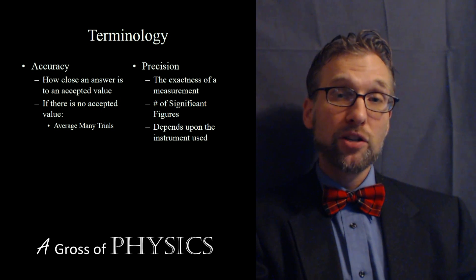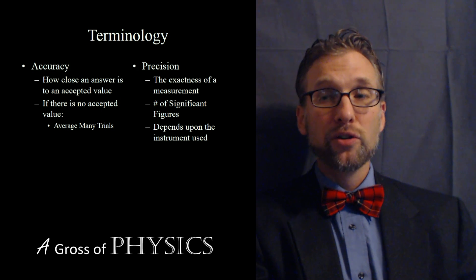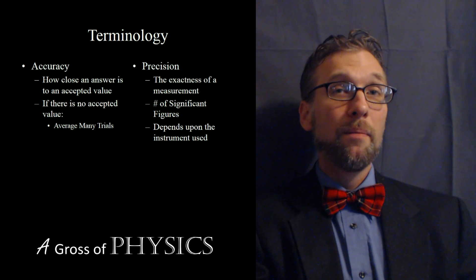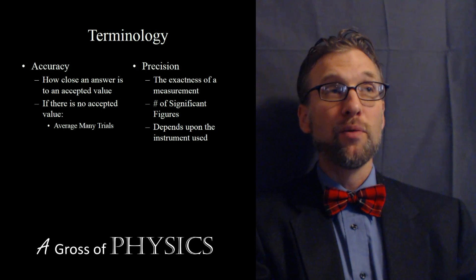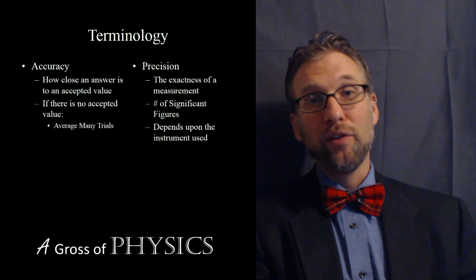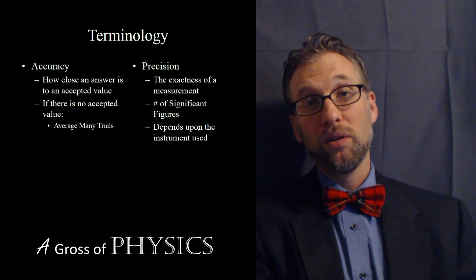Now, accuracy is a measure of how close you are to an accepted value. For example, if I'm trying to measure the acceleration of gravity on the earth and I get 10, I'm about .2 meters per second squared off from our 9.8 value. And some would call that fairly accurate.